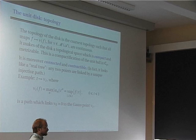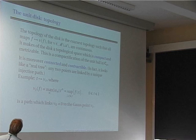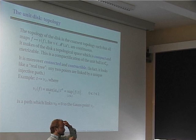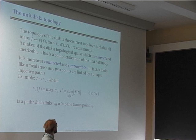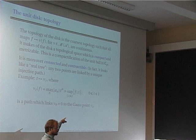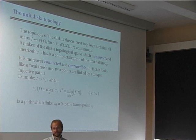Moreover, this space is connected and contractible, and in that case you can join any two points by a unique injective path. As an example, I show you a path from the zero point to the Gauss point. Define ν_t by: for f = Σ a_n z^n, ν_t(f) = max_n |a_n| t^n. This is exactly the supremum of f on the disk of center zero and radius t, and it is multiplicative by Gauss. So this gives a semi-norm, and the map t ↦ ν_t is continuous.